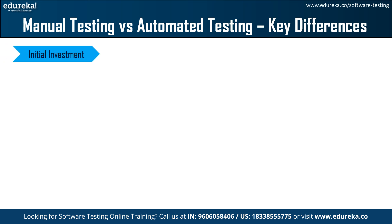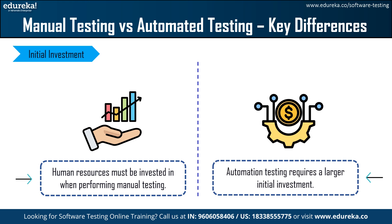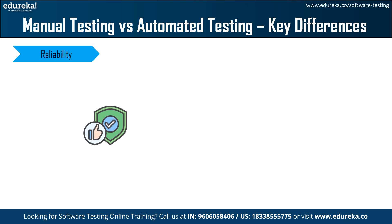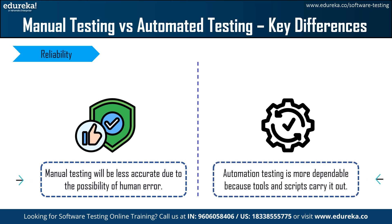Next is initial investment. Human resources must be invested when performing manual testing. Smaller projects or projects with frequently changing requirements are generally more cost efficient, and the initial setup costs are less. Whereas in automation testing, we require a huge amount of investment — initial setup costs and tool licensing can be costly. Moving on to reliability: manual testing will be less accurate due to the possibility of human error, while automation testing is more dependable because the tools and scripts carry it out.